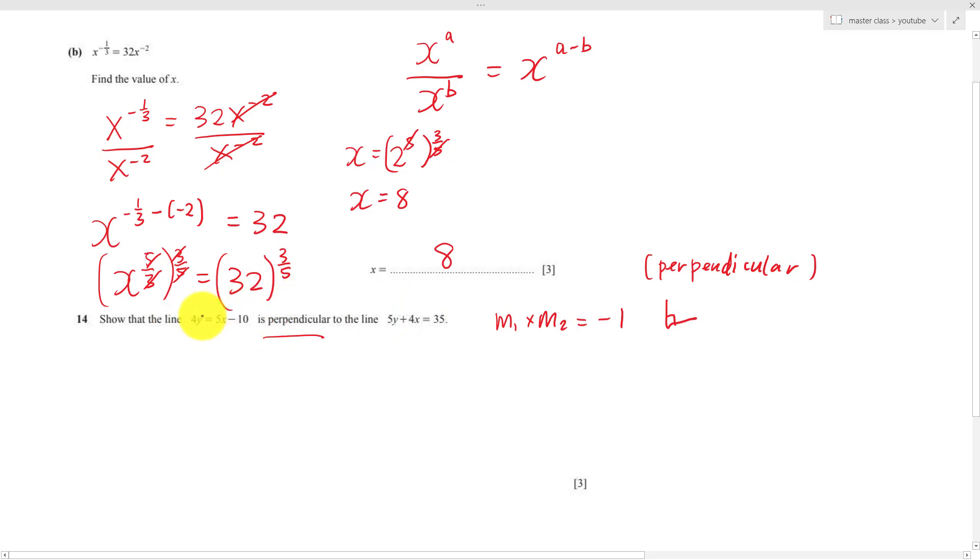I want to find the gradient for the first line and the second line. Both are linear, so the easiest way is to arrange them into y equals mx plus c because then we can know their m value. I will arrange here: 4y equals to 5x minus 10, so y equals to 5 over 4x minus 10 over 4. I got my first gradient, m1 is 5 over 4.